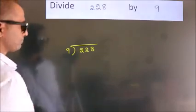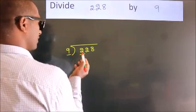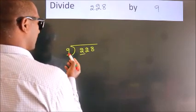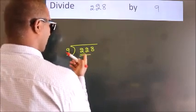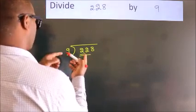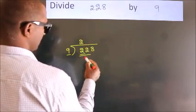Next, here we have 2. Here 9. 2 is smaller than 9, so we should take 2 numbers: 22. A number close to 22 in the 9 table is 9 times 2 equals 18.